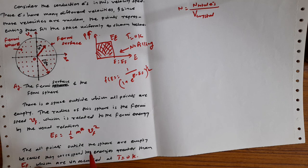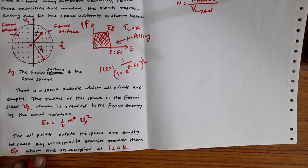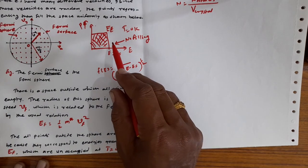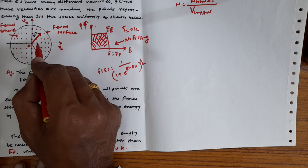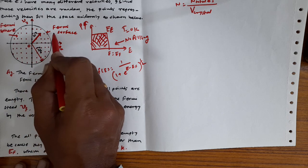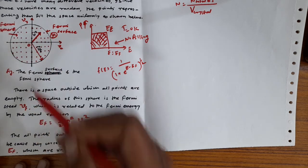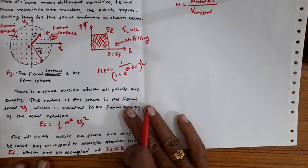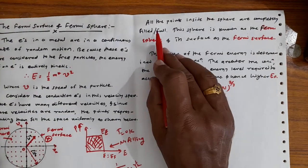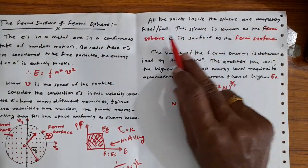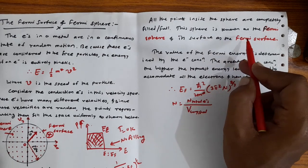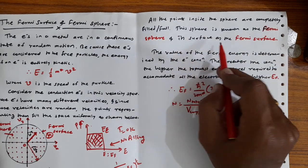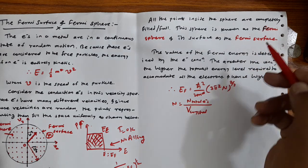All the points outside the sphere are empty because they correspond to energy greater than EF which are unoccupied at absolute zero temperature. All the points inside the sphere are completely filled. This sphere is known as the Fermi sphere and its surface as the Fermi surface.